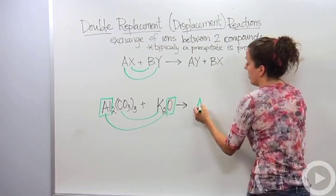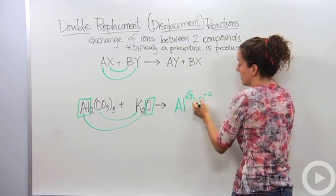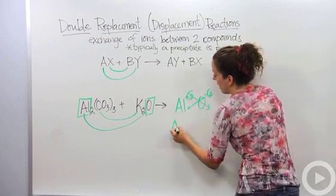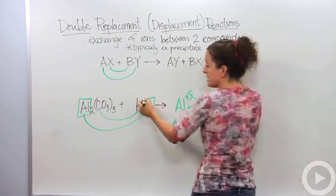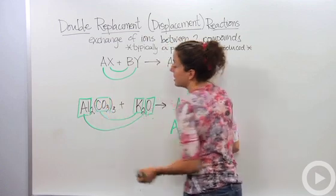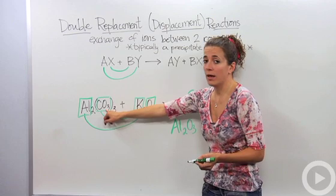Well, aluminum makes a plus three ion. Oxygen makes a minus two. Cross those to make it even. And we come up with a new product, Al2O3. And now potassium is going to bond with carbonate. Carbonate is CO3. That is carbonate. So we're going to actually keep that within the compound.